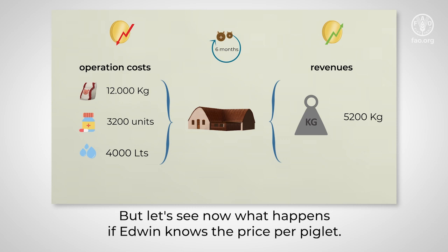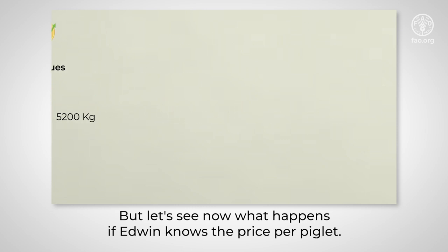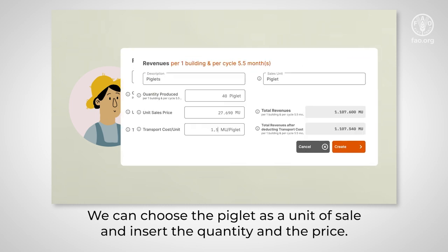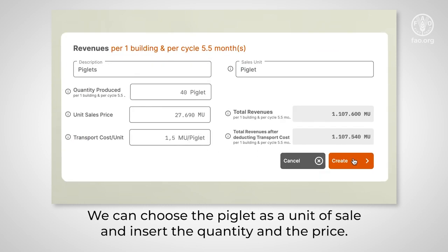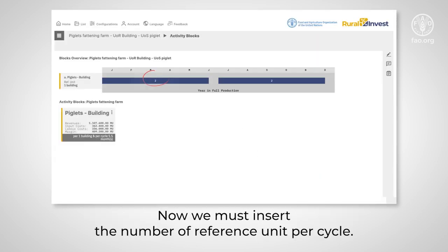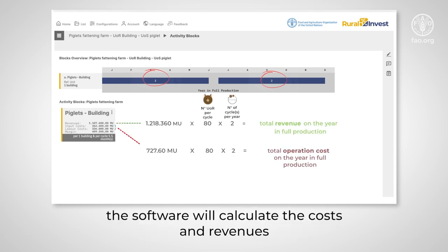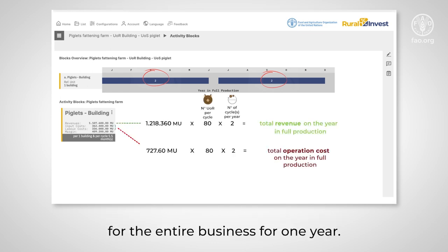Let's see now what happens if Edwin knows the price per piglet. We can choose the piglet as a unit of sale and insert the quantity and the price. Now we must insert the number of reference units per cycle. With the block completed, the software will calculate the costs and revenues for the entire business for one year.